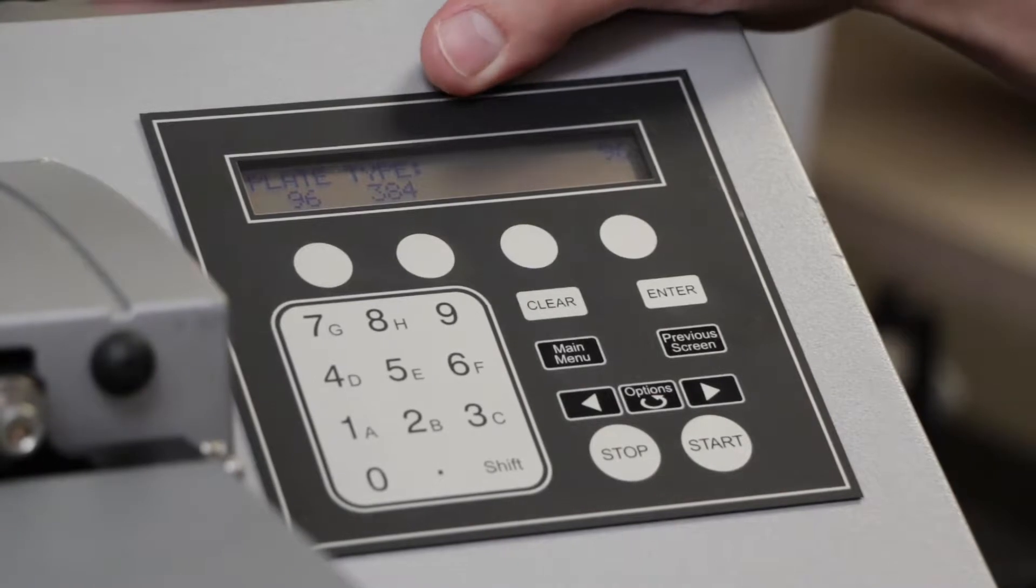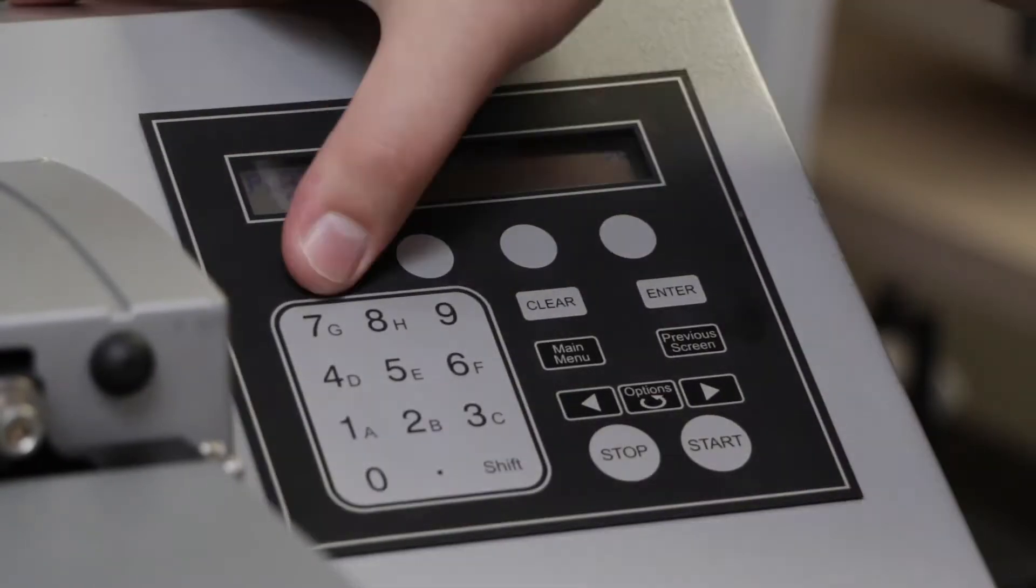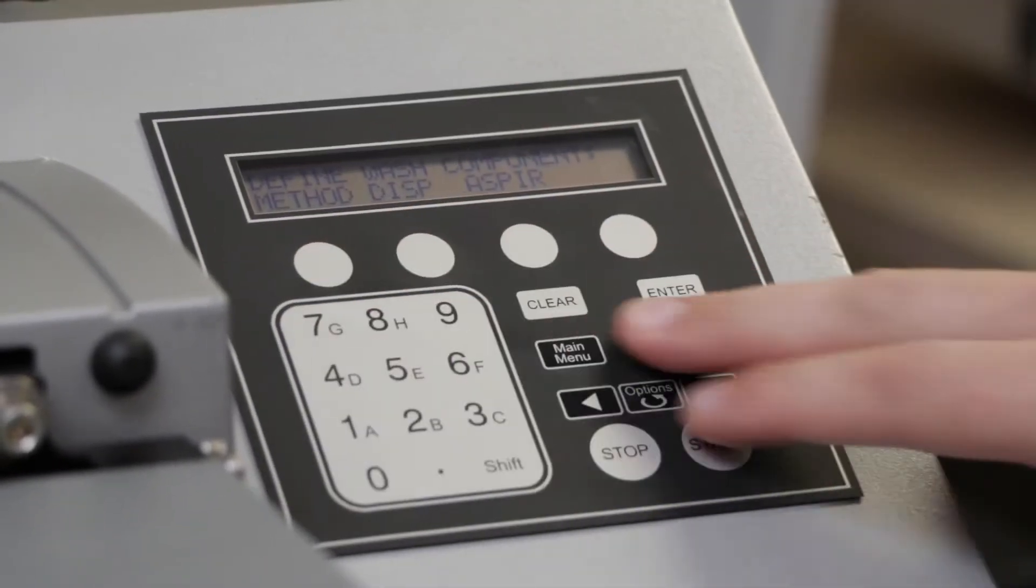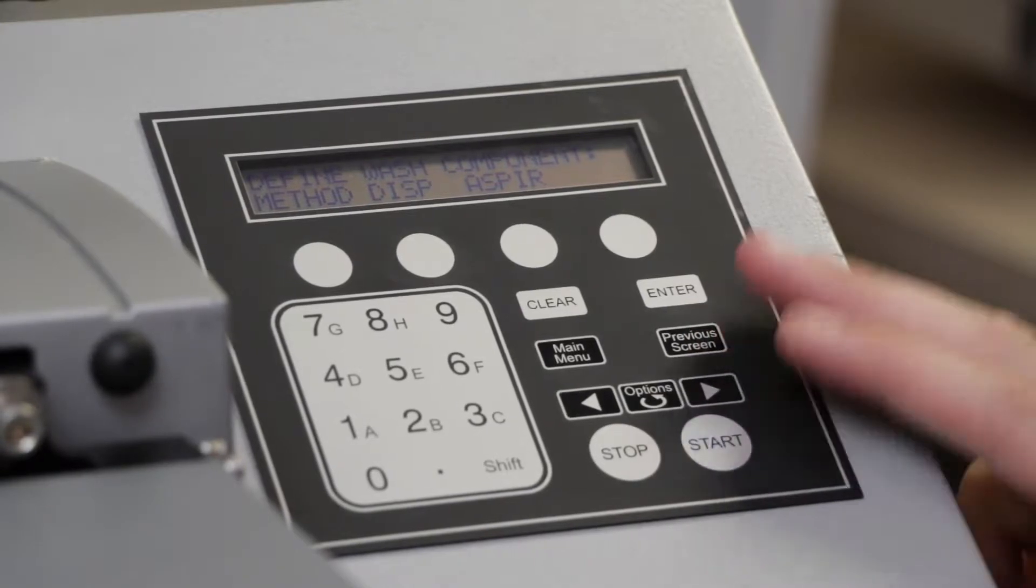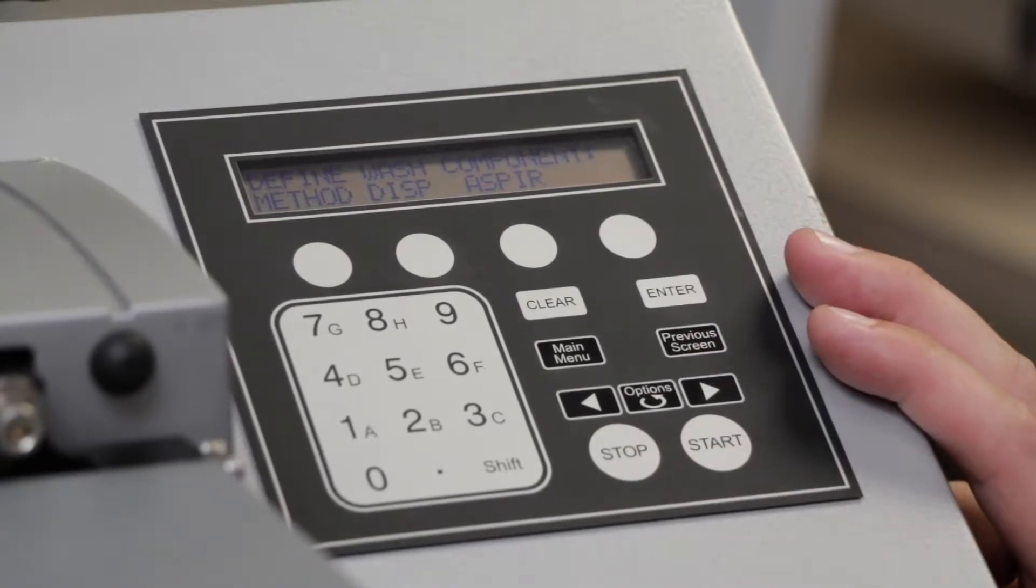Select your plate type. In our case, we'll be using a 96-well plate. From here, we can see three different options: Method, Dispense, and Aspirate.